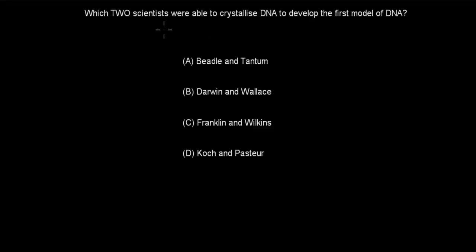Next question. Which two scientists were able to crystallize DNA to develop the first model of DNA? B. Beadle and Tatum. B. Darwin and Wallace. C. Franklin and Wilkins. D. Koch and Pasteur. Pause the video and attempt the question.